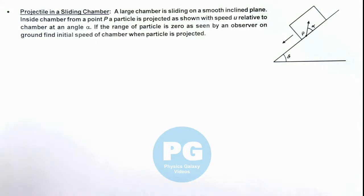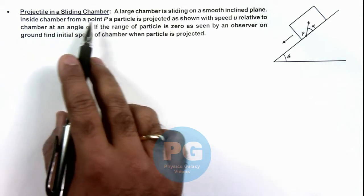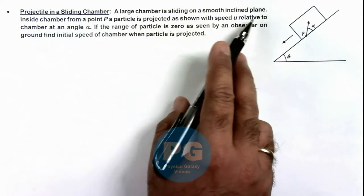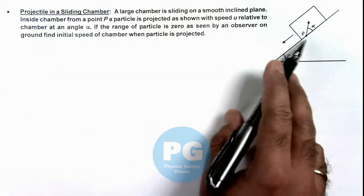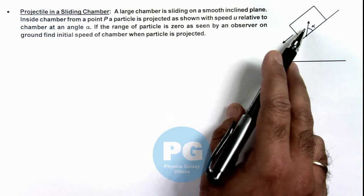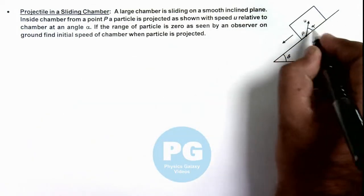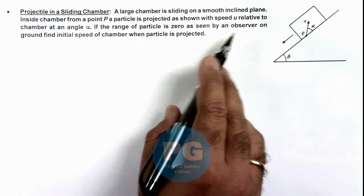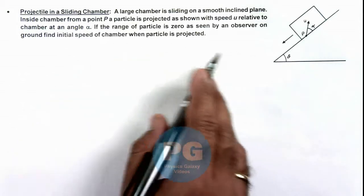In this illustration, we'll describe a situation of a projectile in a sliding chamber. We are given that a large chamber is sliding on a smooth inclined plane, and inside the chamber from a point P, a particle is projected as shown with a speed u relative to the chamber at an angle alpha. If the range of the particle is zero as seen by an observer on ground, we are required to find the initial speed of the chamber when the particle is projected.